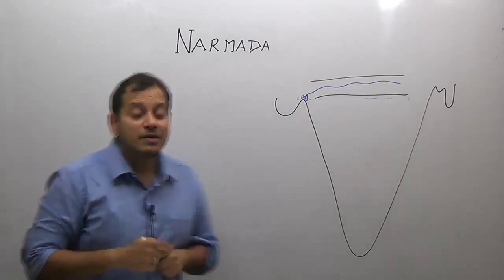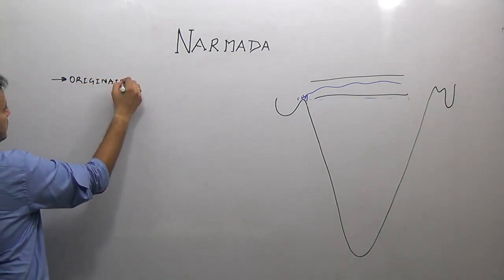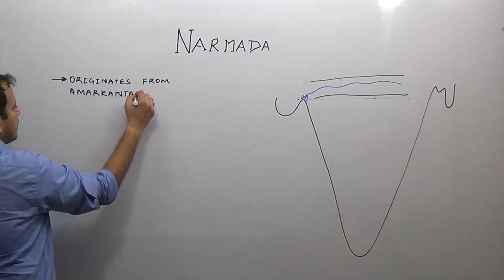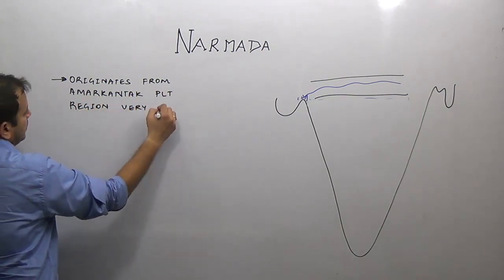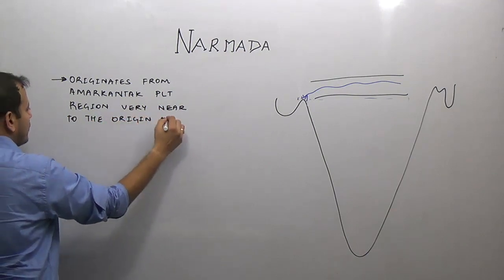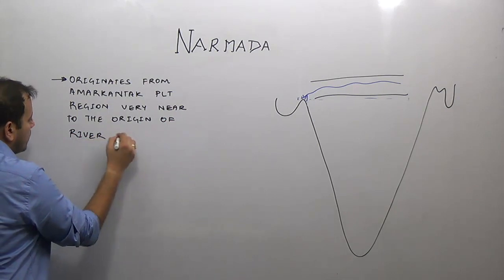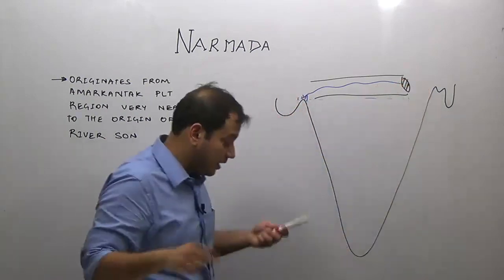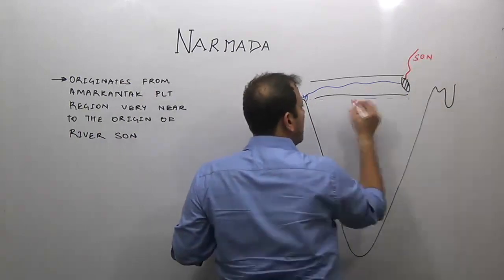River Narmada originates from the Amarkandak Plateau region. It is very near to the origin of river Son. If this is the Amarkandak Plateau region, river Narmada originates from one part and river Son originates from the other part and goes on to meet river Ganga.